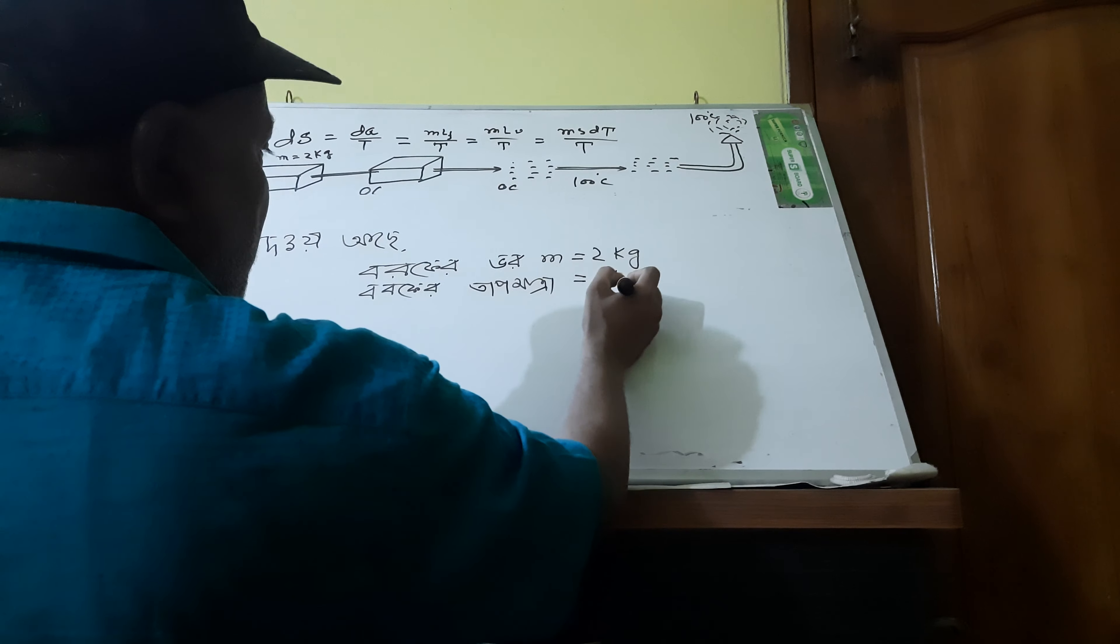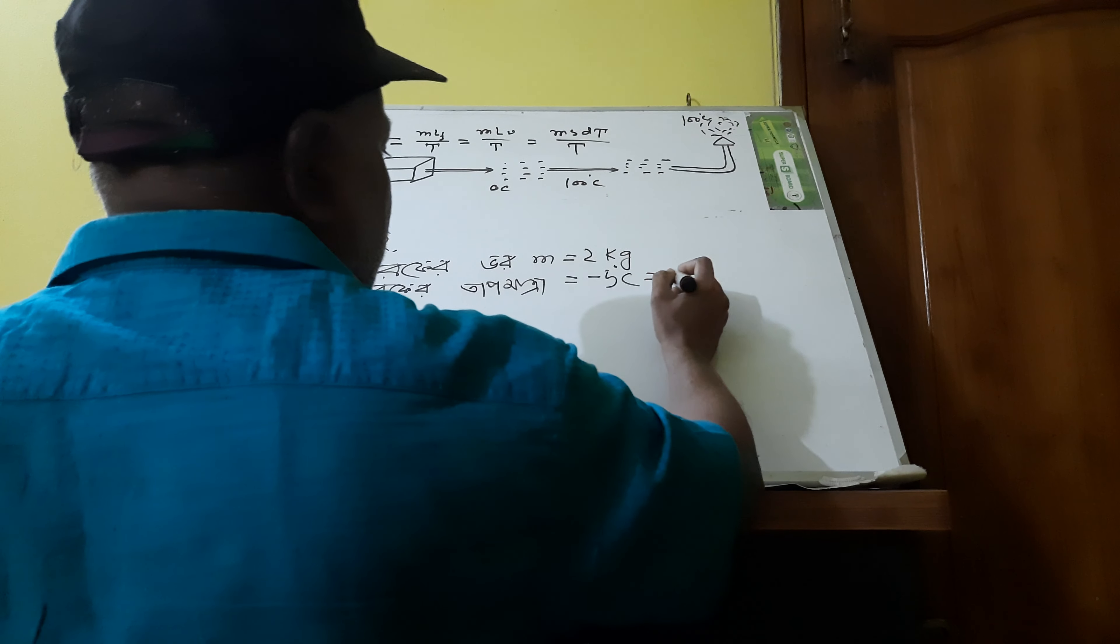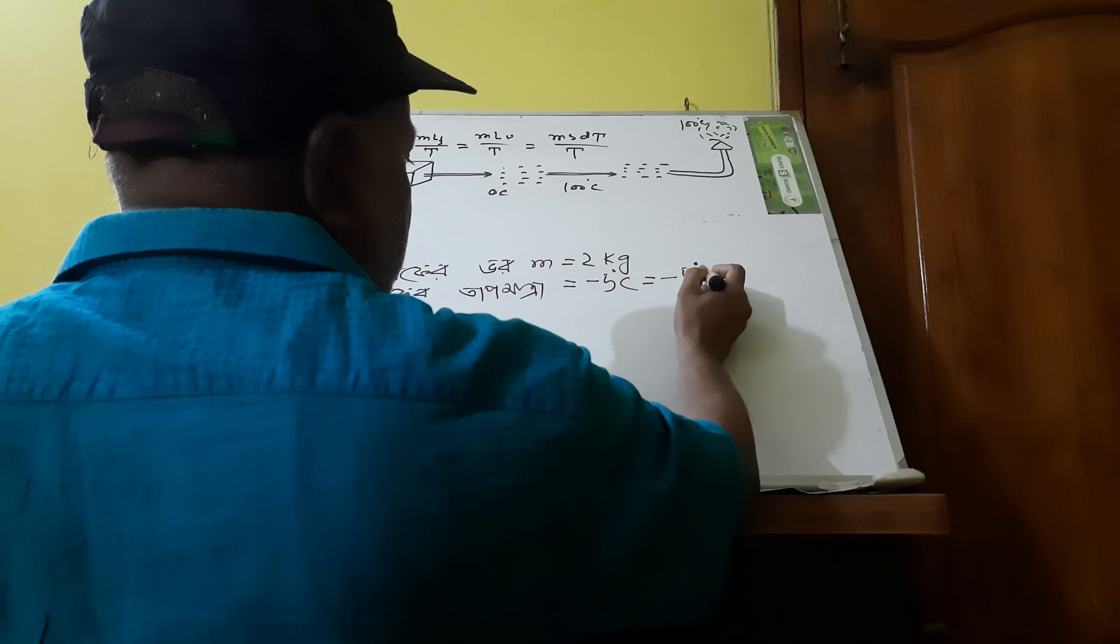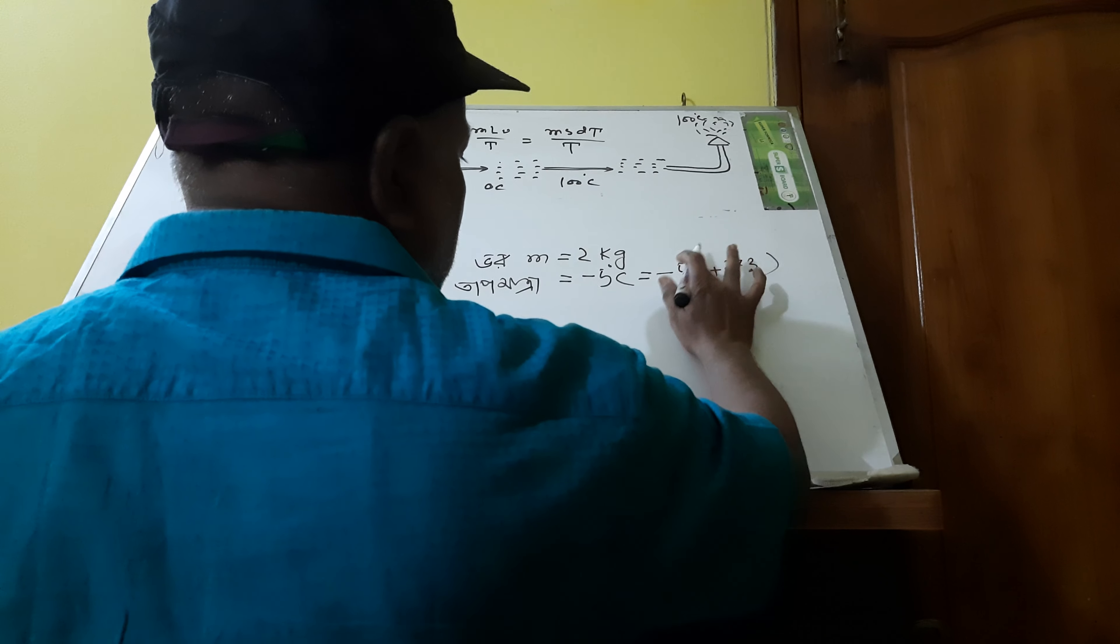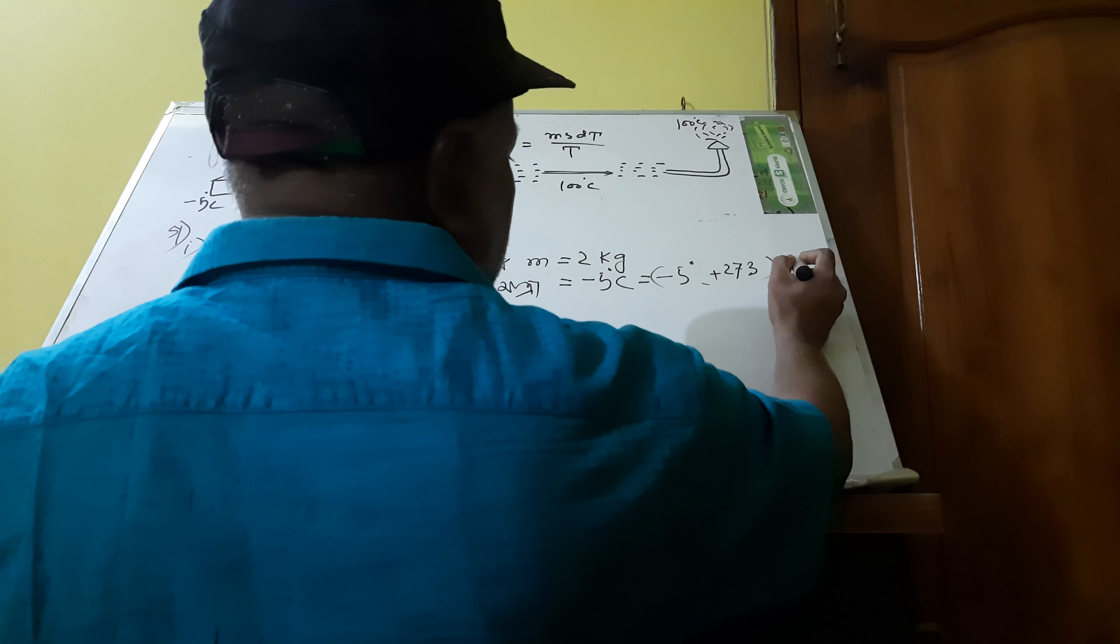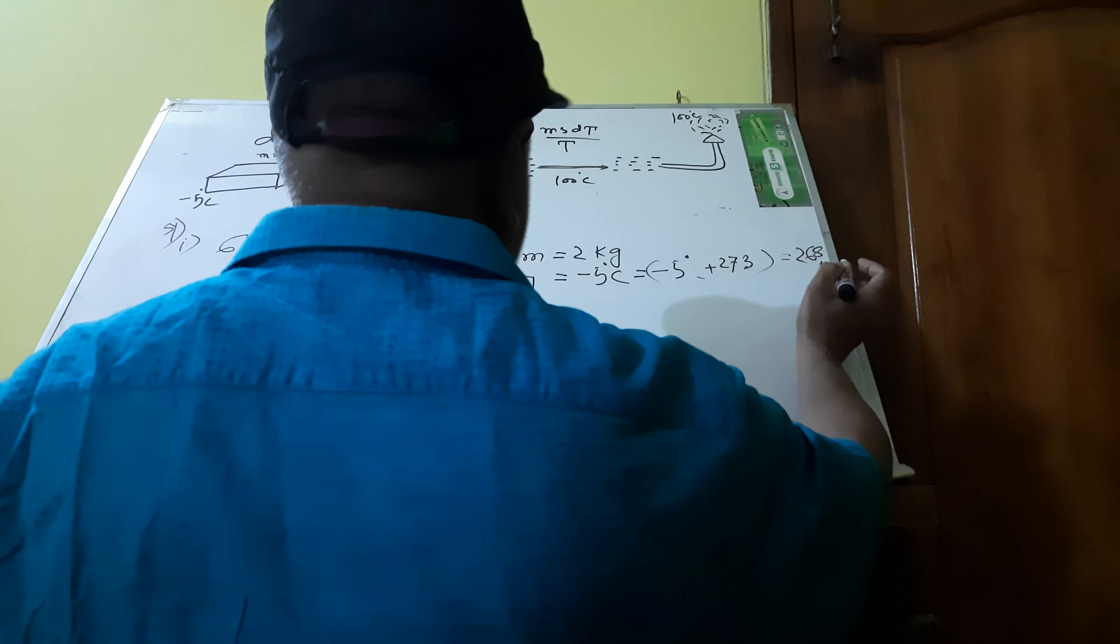Minus 5 degree centigrade to Kelvin. Minus 5 degree centigrade plus 273 equals 273 minus 5 equals 268 Kelvin.